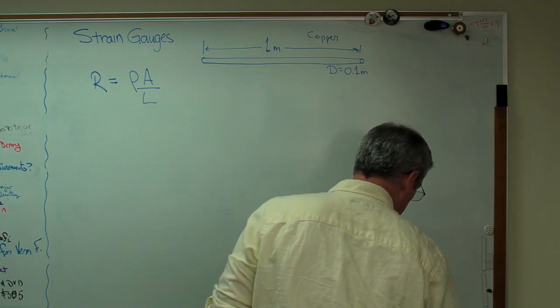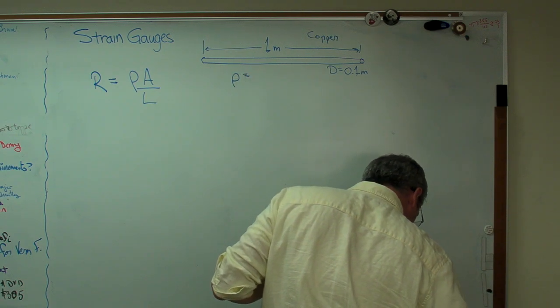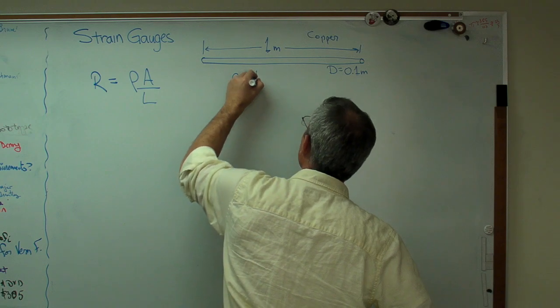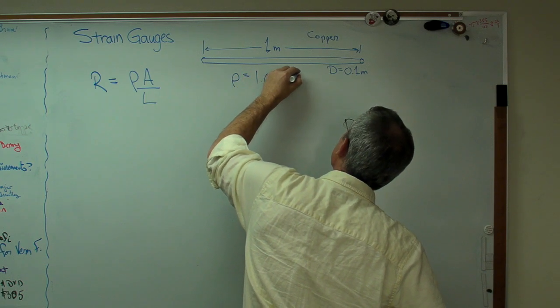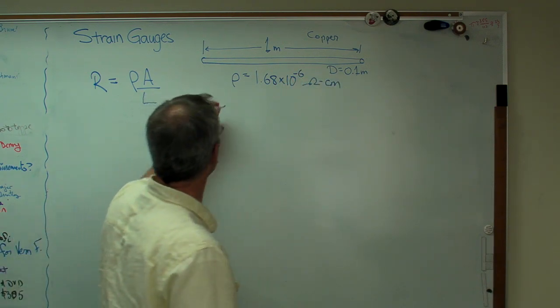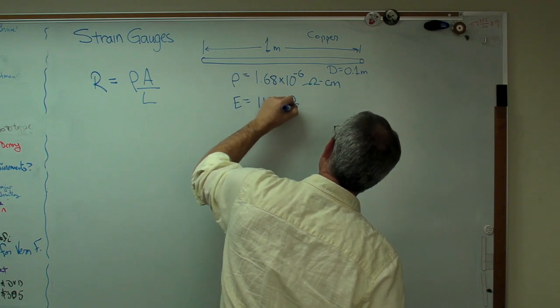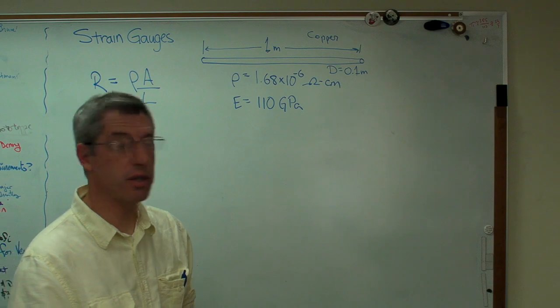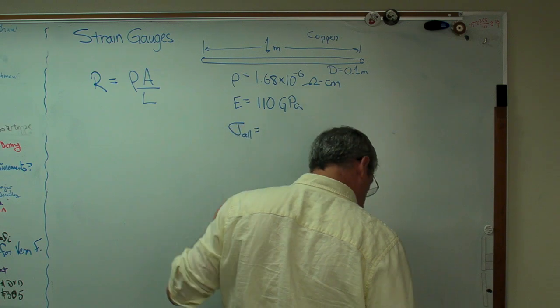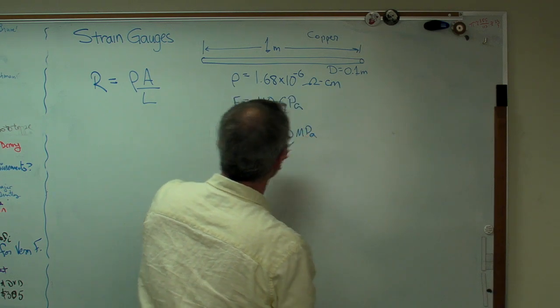All right. So we're going to need a couple of things here. We're going to need to know the elastic modulus, we're going to know the resistivity, and we're going to need to know an allowable stress. So resistivity for a copper wire ρ is, I'm going to look this up here now. It is 1.68 times 10 to the minus 6 ohm centimeters. That's kind of a funny unit, but that's what it is. E is easy. E is 110 GPa. So that puts it right in between aluminum, which is around 70, and steel, which is about 205. And let's make an allowable stress. I think they call that 200 megapascals.